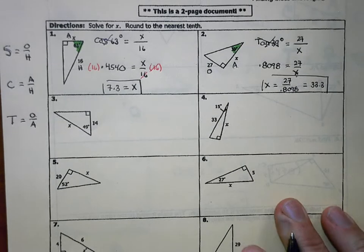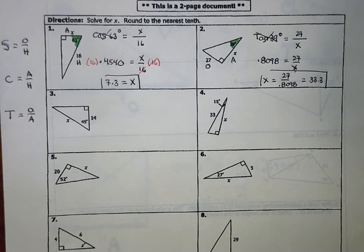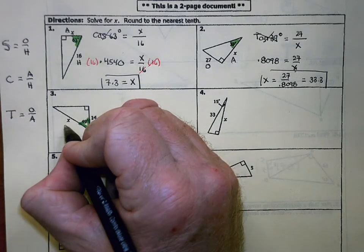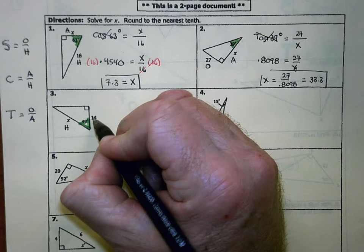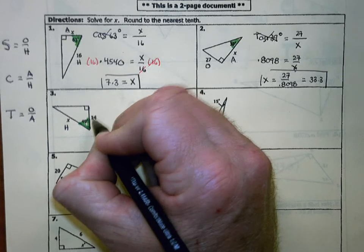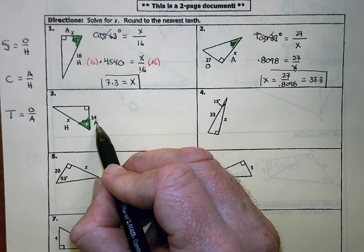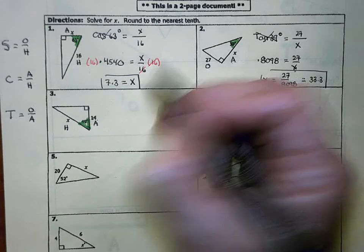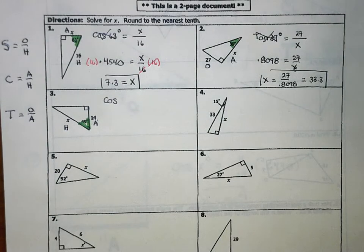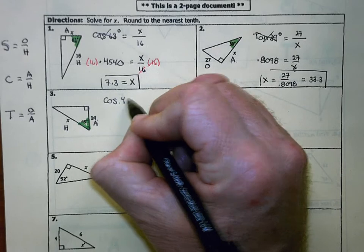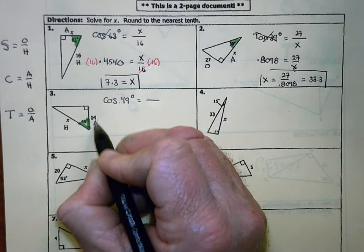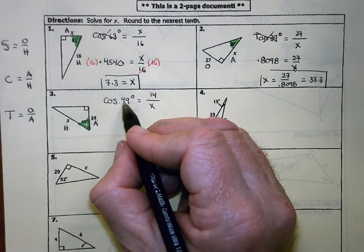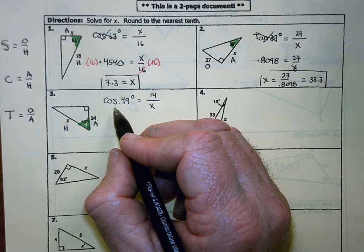Number three: the reference angle is 49 degrees. X is the hypotenuse (H), and the 14 is a leg right next to the theta angle, making it the adjacent leg (A). Since we have adjacent and hypotenuse, this is a cosine problem. I write COS, 49 degrees, an equal sign, and the fraction: adjacent leg 14 over hypotenuse X.